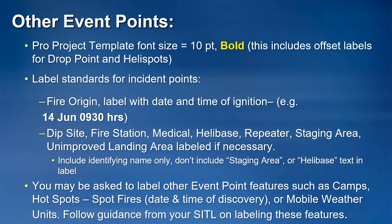The default label properties for incident point features — with the exception of on-feature drop point and helispot labels — is bold 10-point font. This can be adjusted as needed to meet the needs of a particular map audience. If shown, fire origin points should be labeled with a date and time of ignition. When labeled, features such as dip site and staging area should only include an identifying name — do not include text such as 'staging area' or 'dip site' along with the name of the feature, unless instructed by the SIDL to do so. In certain circumstances, you may be asked to label incident features not listed as 'label as necessary' in GeoOps, such as camps or mobile weather units. Always consult with your SIDL when adding labels to these map features.